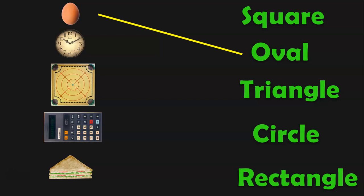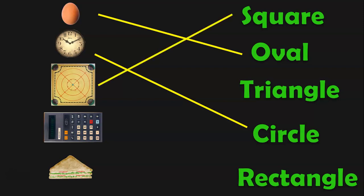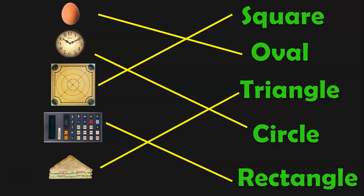The next image is a clock. The clock resembles a circle. The next image is a caromboard which resembles the shape of a square. We are drawing matching lines from the object to the shape to which they resemble. The next is a calculator which resembles the shape of a rectangle. The last one is a sandwich which resembles the shape of a triangle.